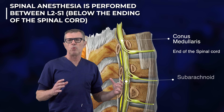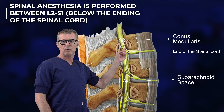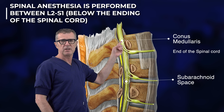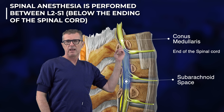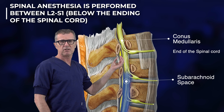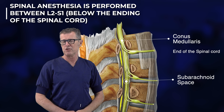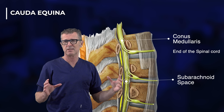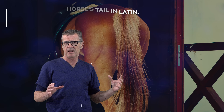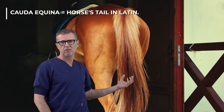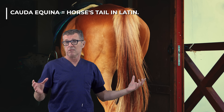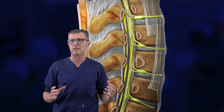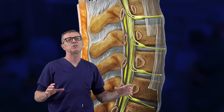Spinal anesthesia is always performed below the level of the conus medullaris. The spinal cord ends somewhere between T12 and L1, and below that point, what descends in the intrathecal space are the terminal nerves, which we call the cauda equina. The term comes from Latin: cauda means tail, and equina means horse — it looks like a horse's tail as it descends in the intrathecal space.